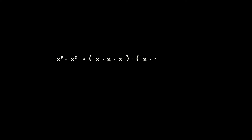And x to the power 5 is x multiplied by itself five times. So what we have, if we count up, is just eight copies of x being multiplied together. Our new expression is equal to x raised to the power 8, and it is no accident that 8 is exactly equal to 3 plus 5.